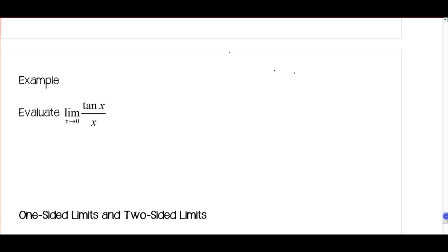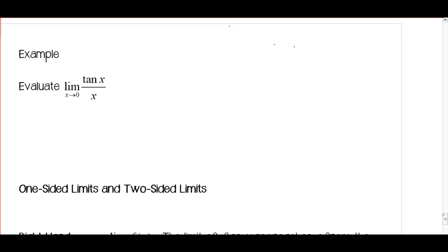All right, so let's take a look at one more example here. We've got the limit as x approaches zero of the tangent of x over x. And again, we can't plug in zero because we'll have zero in the denominator, so we're going to use trig identity and a result from a previous video to help us solve this one.